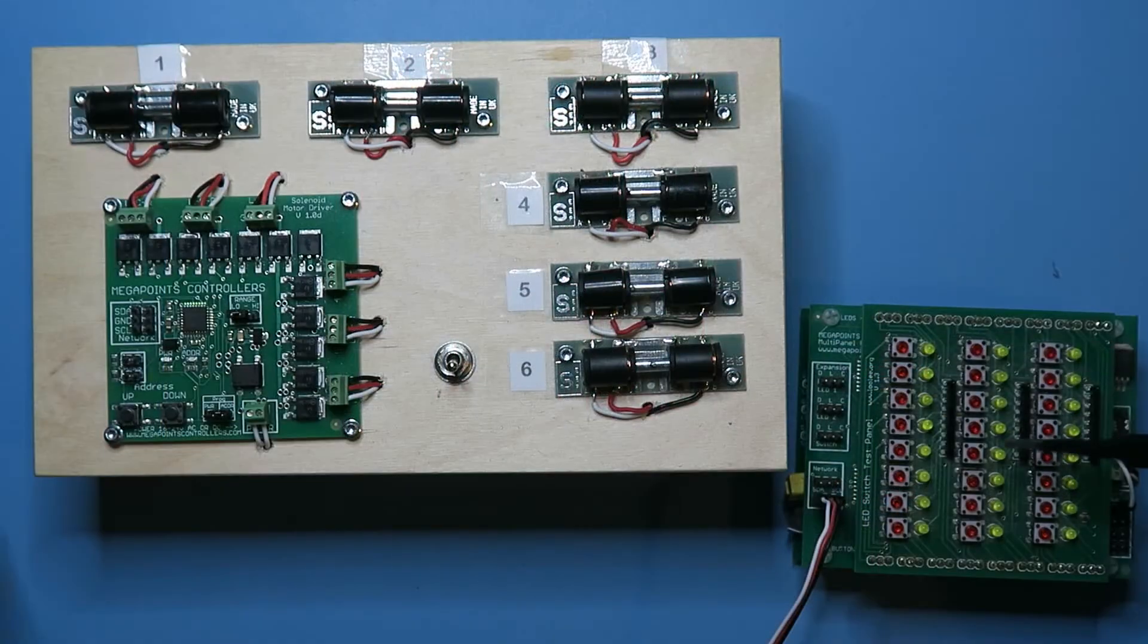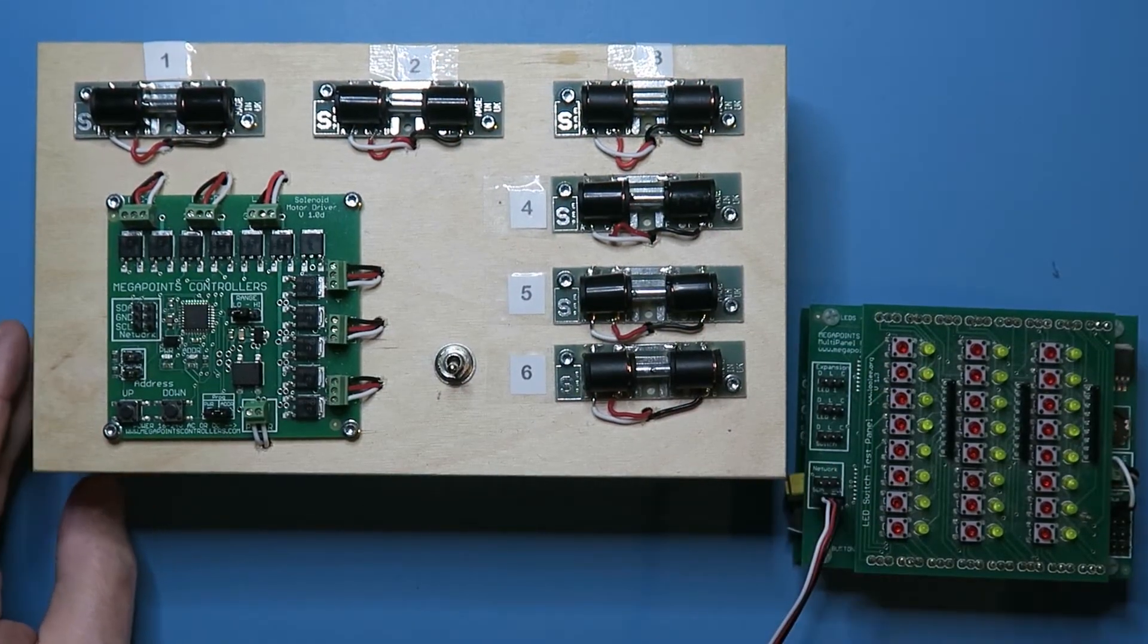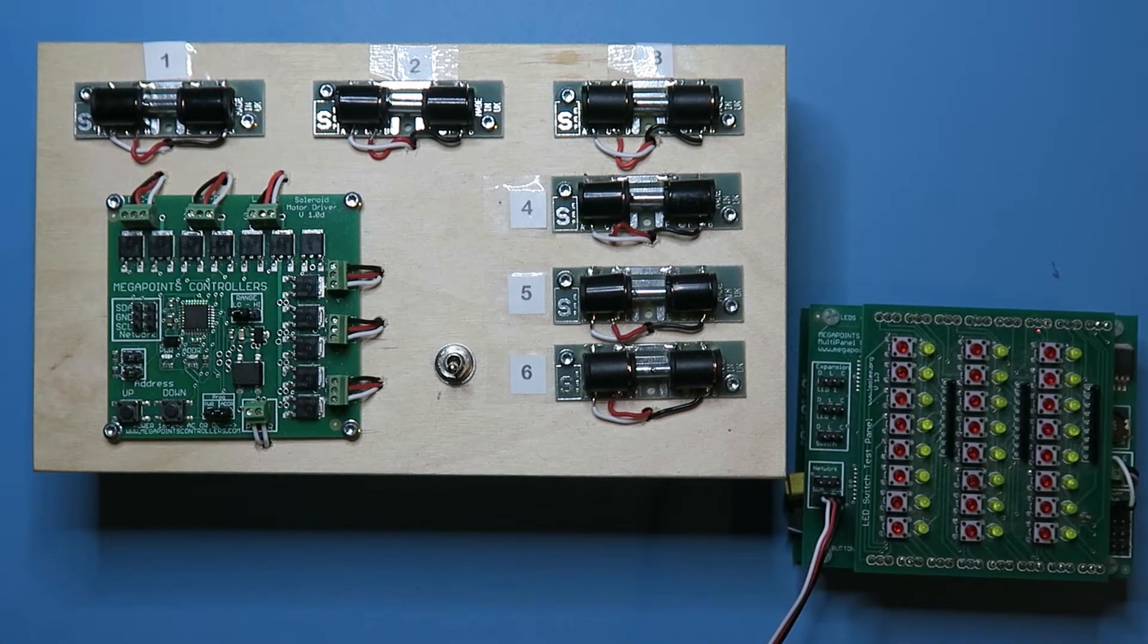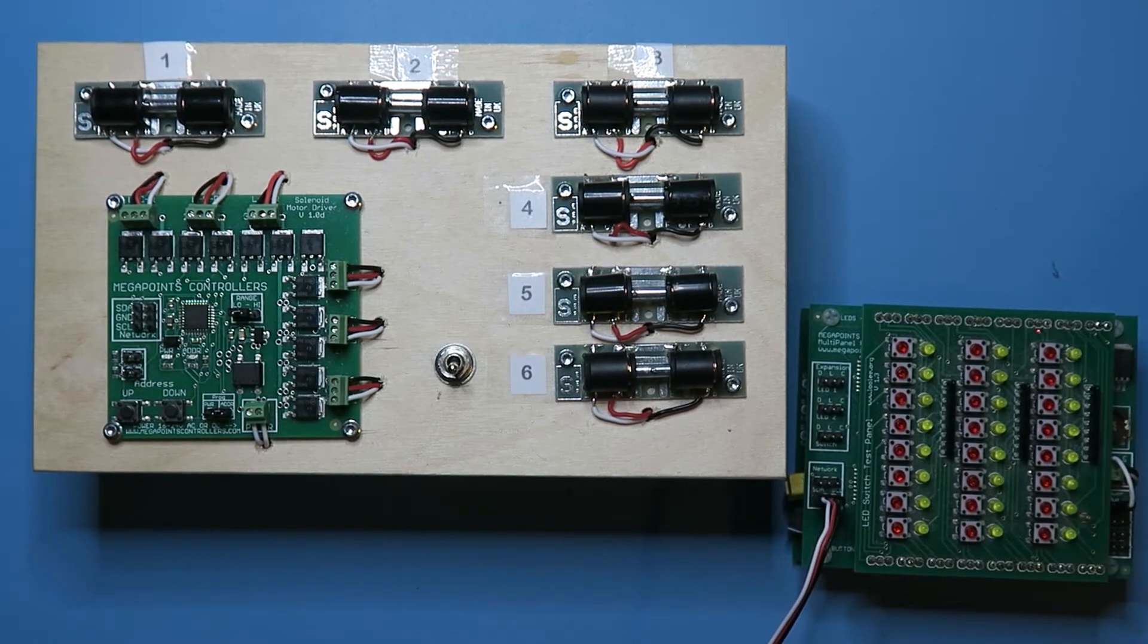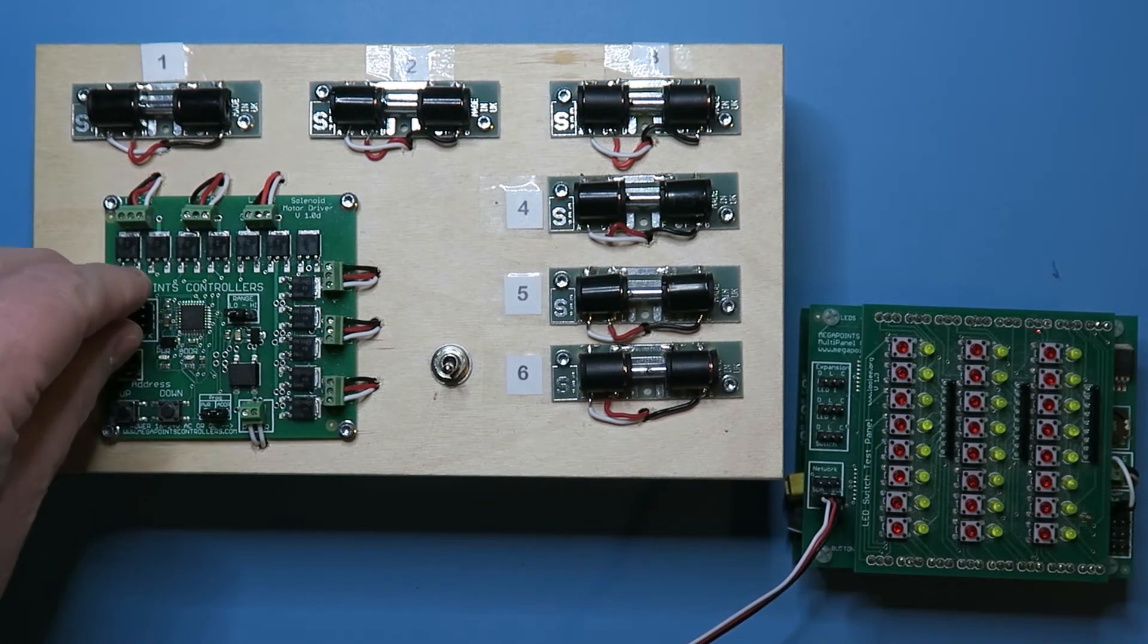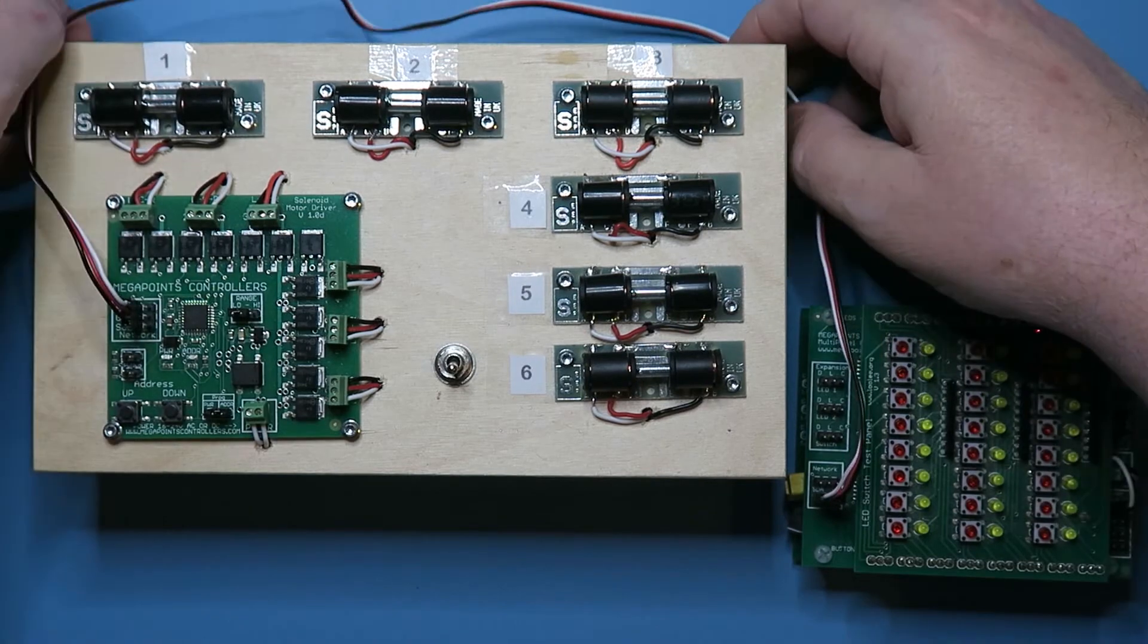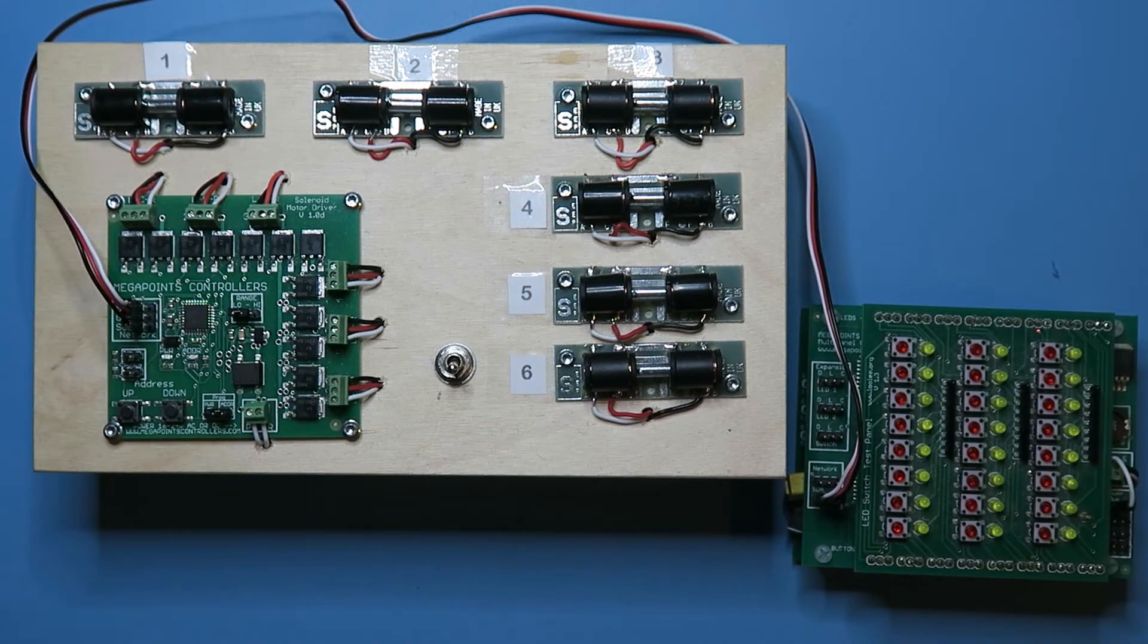I now have a multi-panel processor here and on this I have 24 buttons in groups of eight so that I can fire off the points addressed 1 to 24. And what I'll do, I'll go through the various address ranges on this and you can see how it's done. So first of all I'll connect the network to the multi-panel. You hear the solenoids clunk as the panel tells them which position to go to.